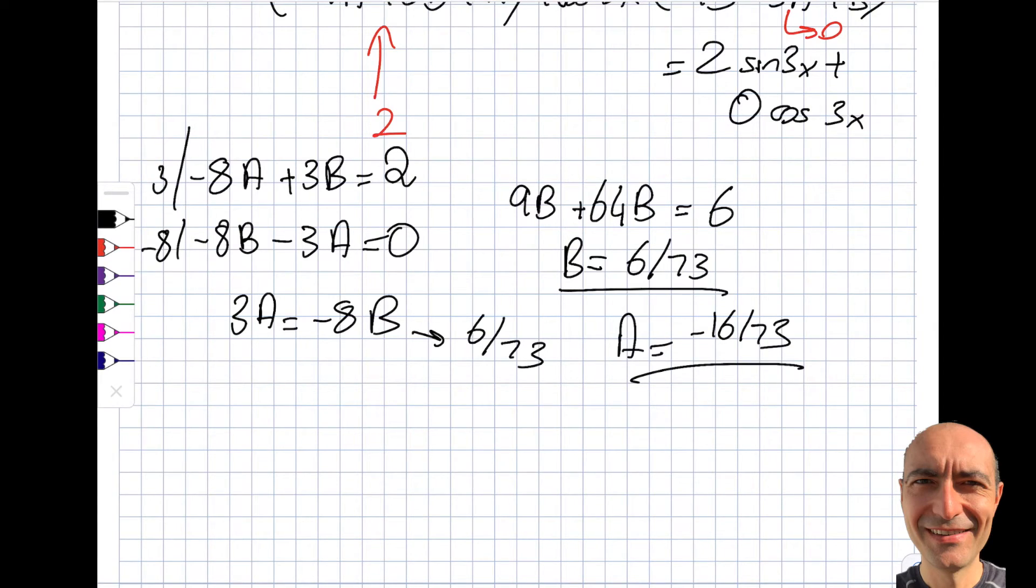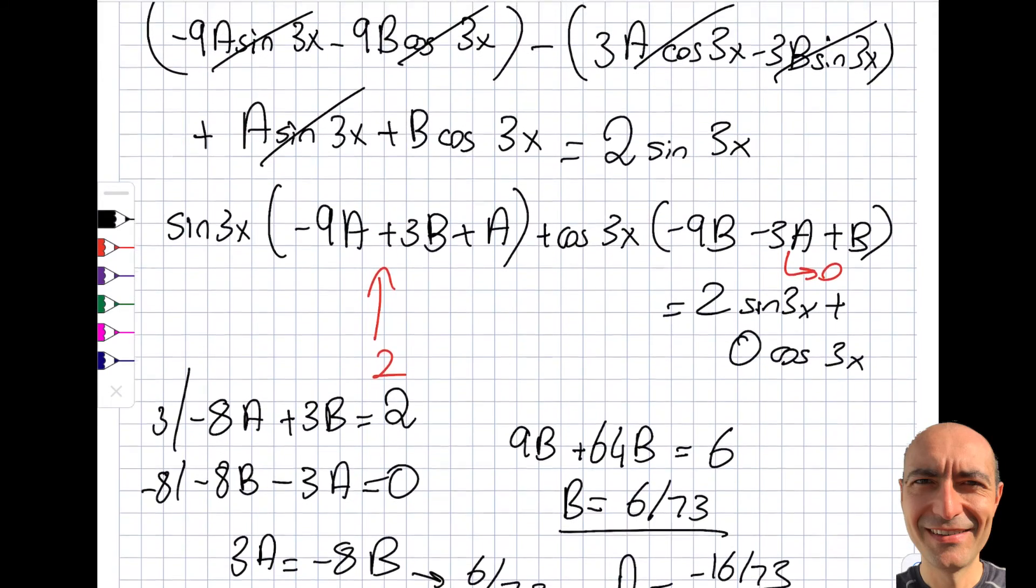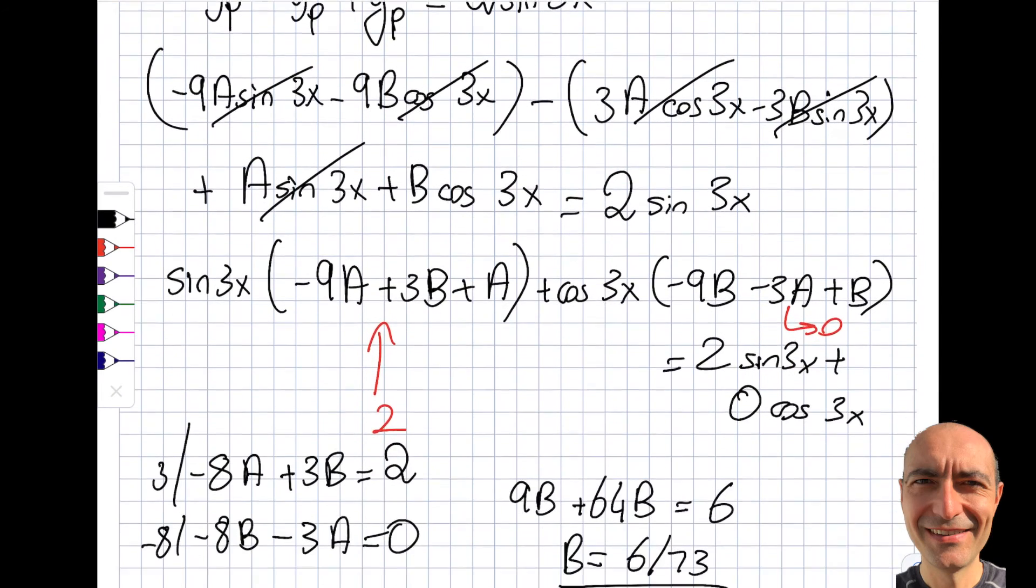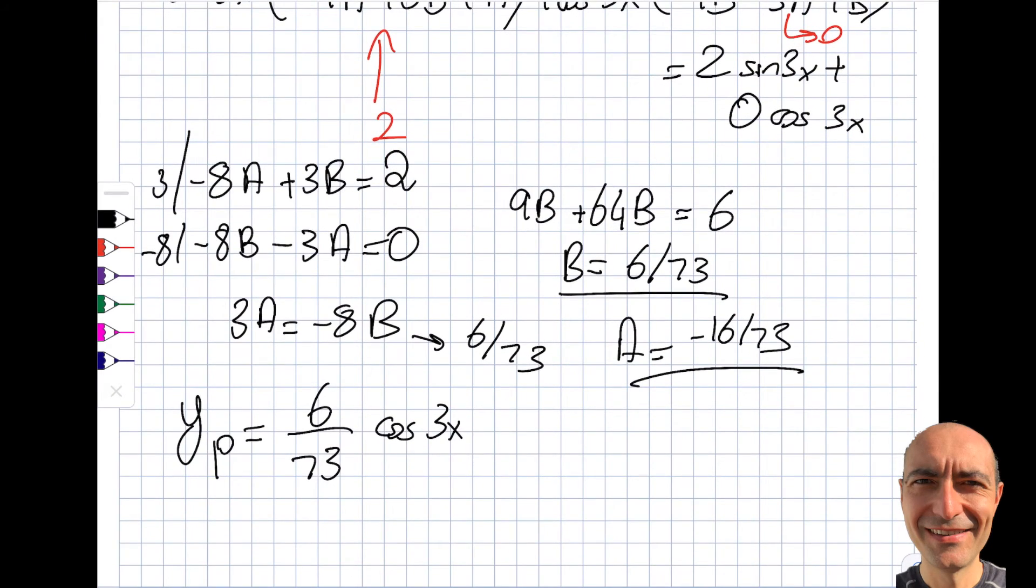What a beautiful set of numbers. But it is what it is, so I get myself yp is equal to 6 by 73 cosine of 3x. Let's be careful what a was, what b was. A is, you can see in here, with respect to sine x. Yep, I'm doing well. Minus 16 by 73 sine 3x.